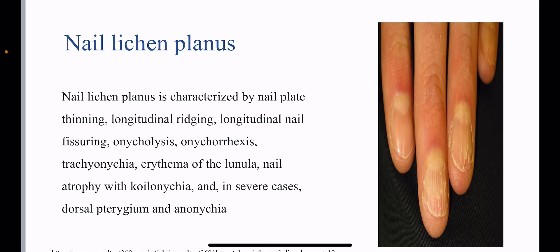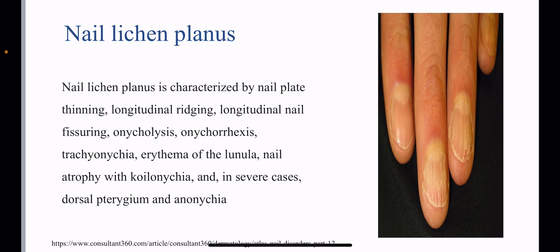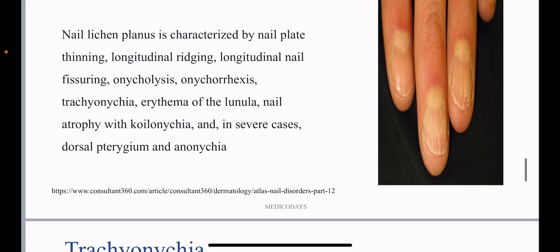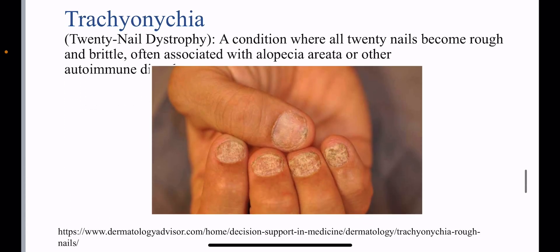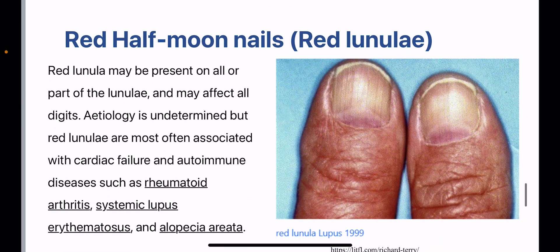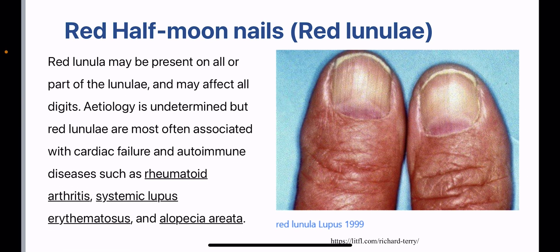Nail lichen planus is characterized by nail plate thinning, longitudinal ridging, longitudinal nail fissuring, onycholysis, onychorrhexis, trachyonychia, and erythema of the lunula. Nail atrophy with koilonychia may occur, and in severe cases, dorsal pterygium and anonychia can also happen. Trachyonychia, also known as 20-nail dystrophy, is the condition where all 20 nails become rough and brittle, often associated with alopecia areata or other autoimmune conditions.